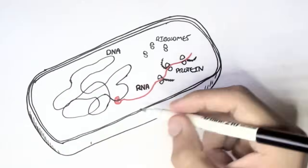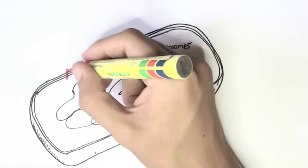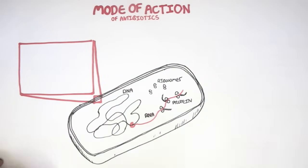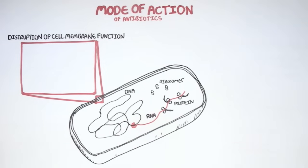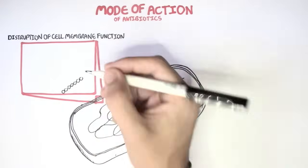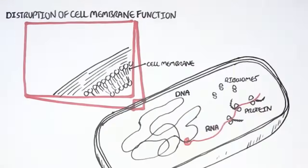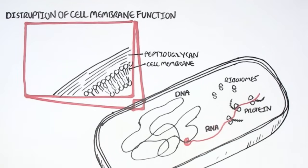The first type of antibiotic I want to talk about are the ones that target the cell membrane. These antibiotics will disrupt the cell membrane function, which means that they disrupt the phospholipid bilayer. Here is the cell membrane, and here is the cell wall, known as the peptidoglycan. They are different.